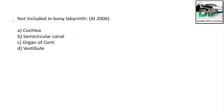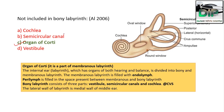Next question. Not included in the bony labyrinth: Option A cochlea, Option B semicircular canal, Option C organ of Corti, Option D vestibule. The correct answer is organ of Corti — it is not included in the bony labyrinth. The bony labyrinth is CVS: cochlea, vestibule, semicircular canal. The organ of Corti is present in the membranous labyrinth.